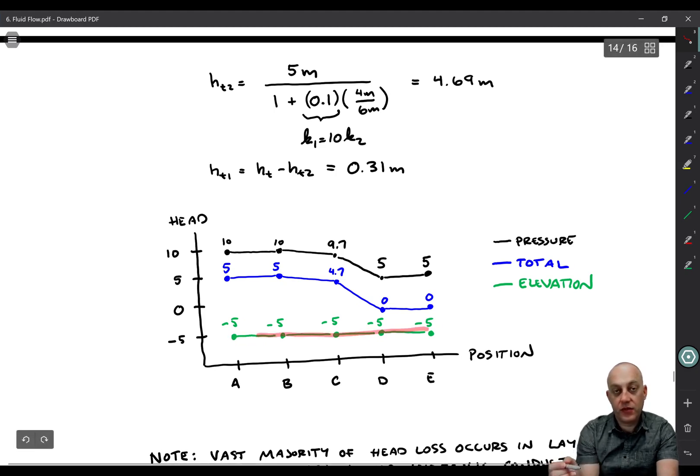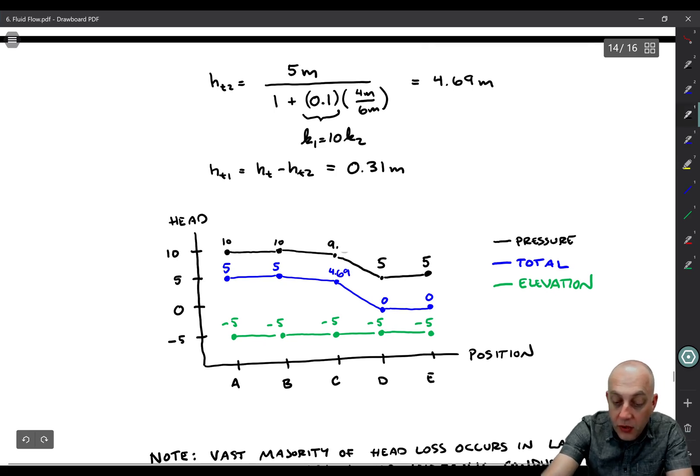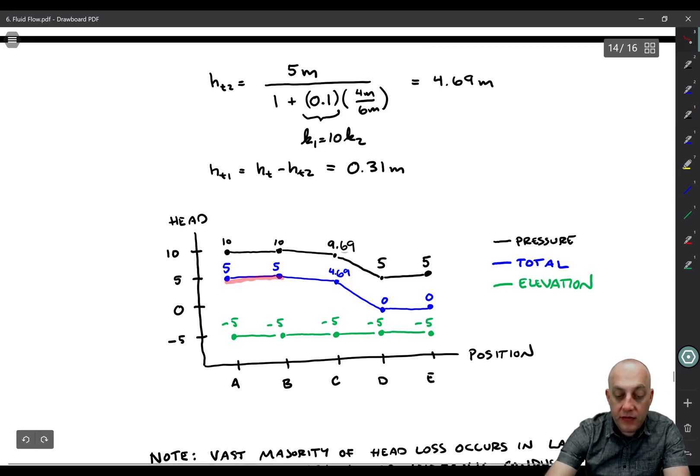We start with elevation head. They go along negative 5. Super boring plot, right? Now we get total head. In the blue lines, it's 5 at points A and B. Then it drops down to this is actually 4.69. And we carry the significant figures through. And similarly, this is 9.69 at the top. So we've got our total head line, right? 5, 5, 4.69, and then it drops down to 0 at point D.